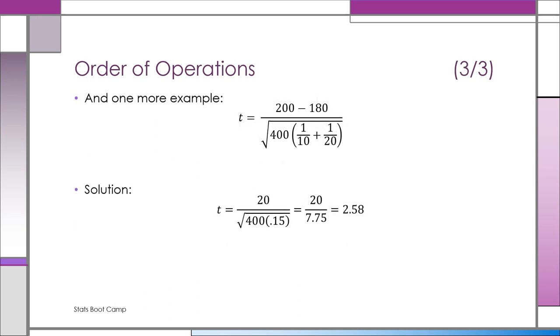Here's another example just to give you more practice. If you need more practice, I'm sure you can find examples in your high school algebra book. T is equal to 200 minus 180, so the numerator is 20. Now the denominator has a square root. It has 400 multiplied by something inside of parentheses. And inside of parentheses, what do we have? Two fractions that we have to add up.